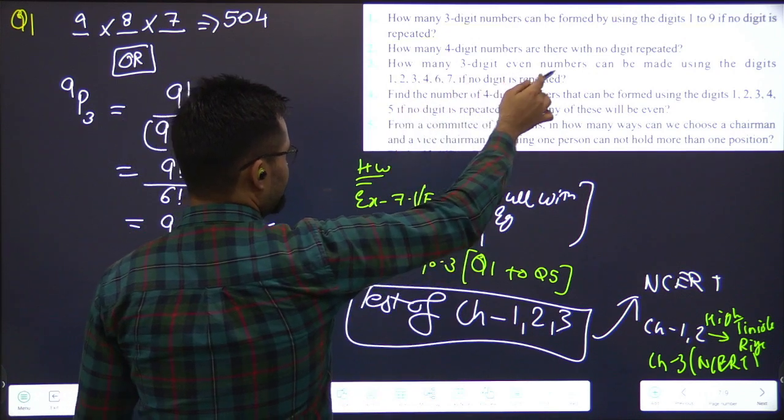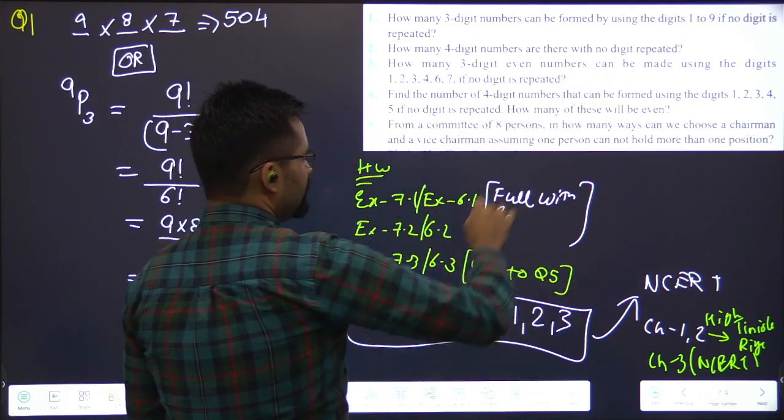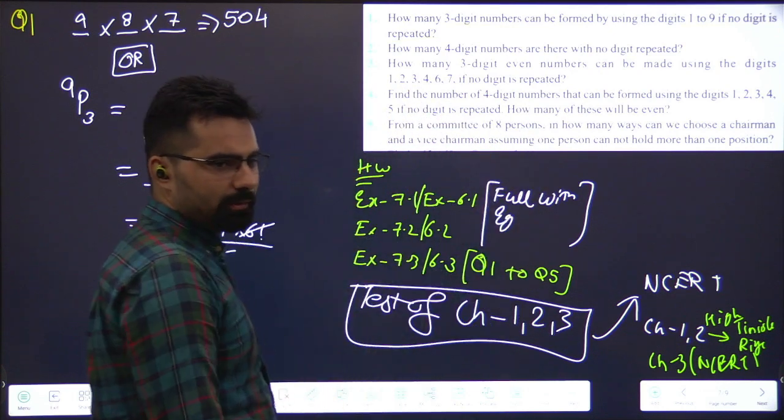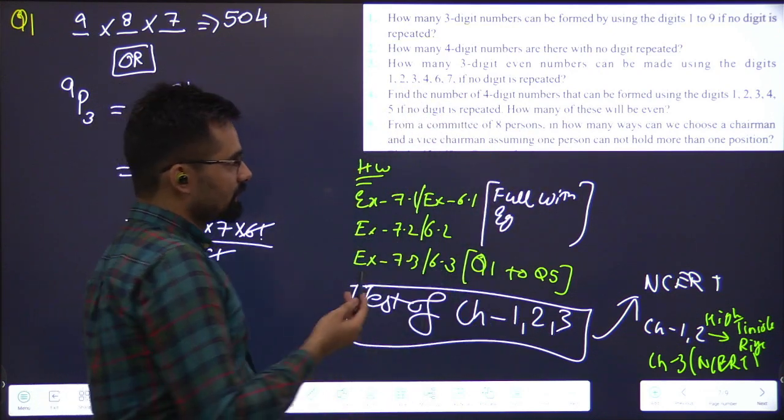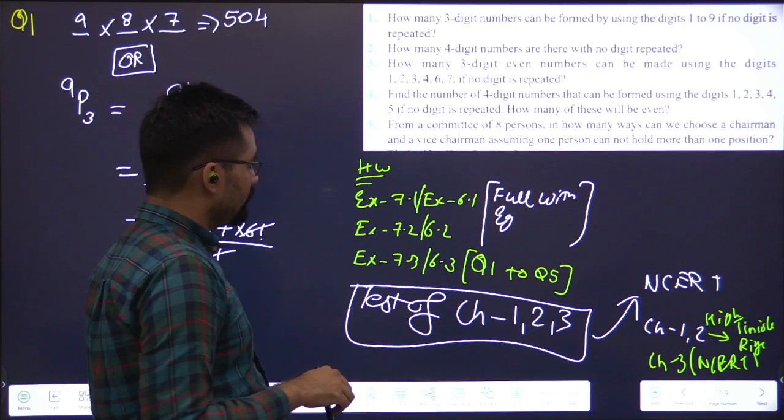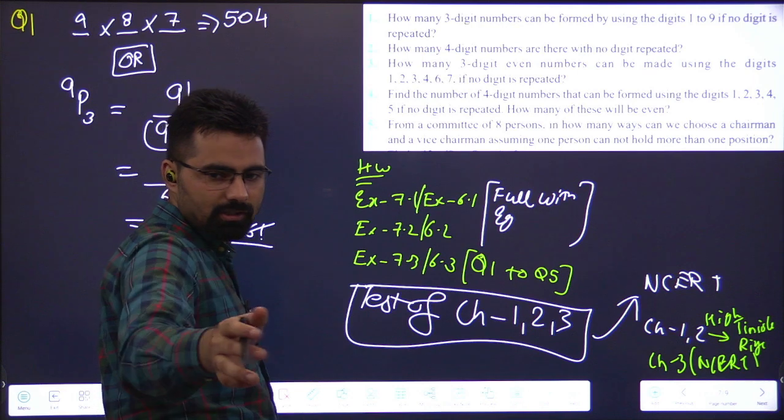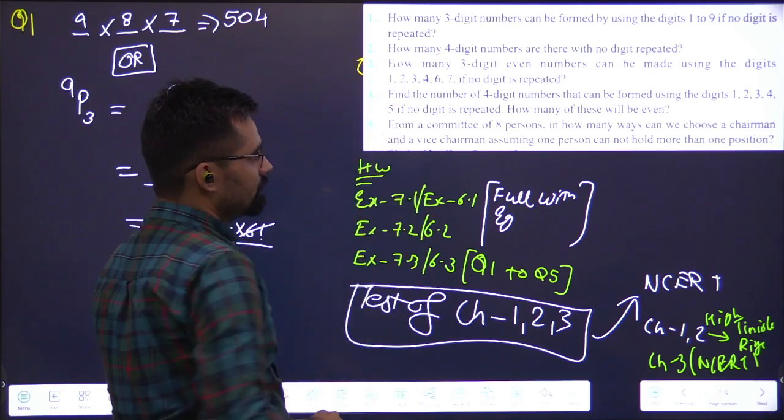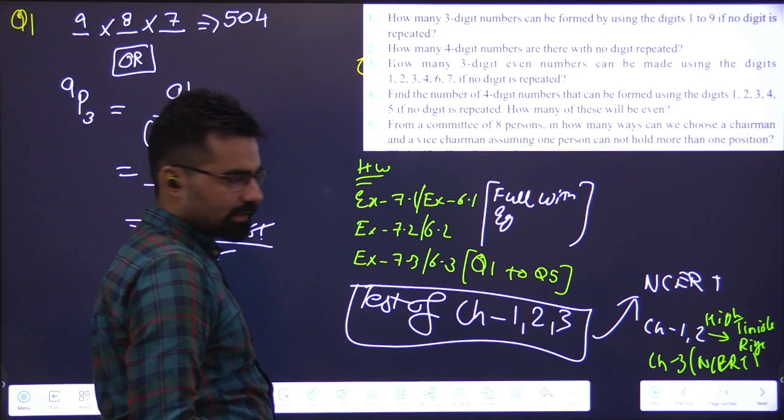How many three-digit even numbers can be made using the digits 1, 2, 3, 4, 6, 7 if no digit is repeated? We don't normally do it instead of P and C. How do we do it? Three digits even number and no one repeat.